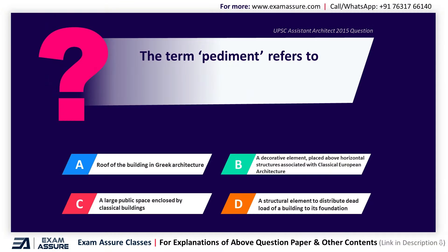Next question. The term pediment refers to — Option A: Roof of the building in Greek architecture, Option B: A decorative element placed above horizontal structures associated with classical European architecture, Option C: A large public space endorsed by classical buildings, Option D: A structural element to distribute dead load of a building to its foundation. The correct answer is Option B, a decorative element placed above horizontal structures associated with classical European architecture.